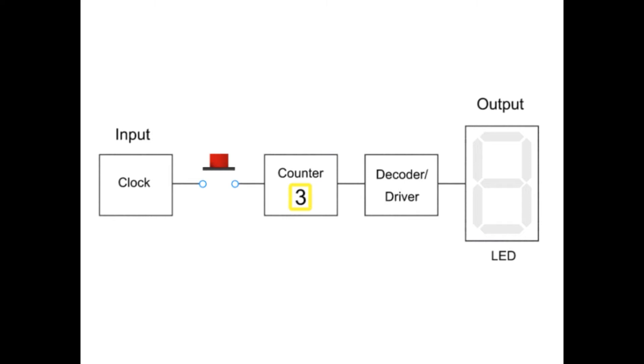Because the counter cycles through digits so quickly, it's impossible to tell where it will stop. With this button push, it has stopped at 3.